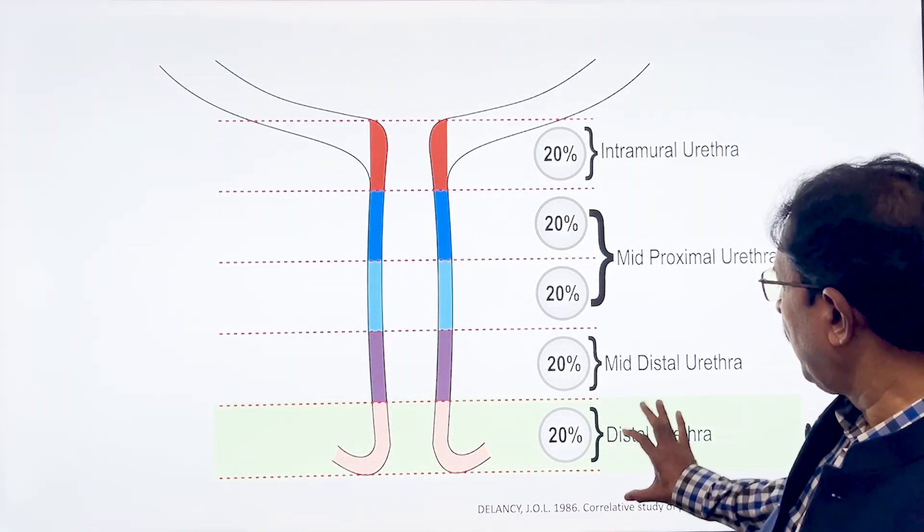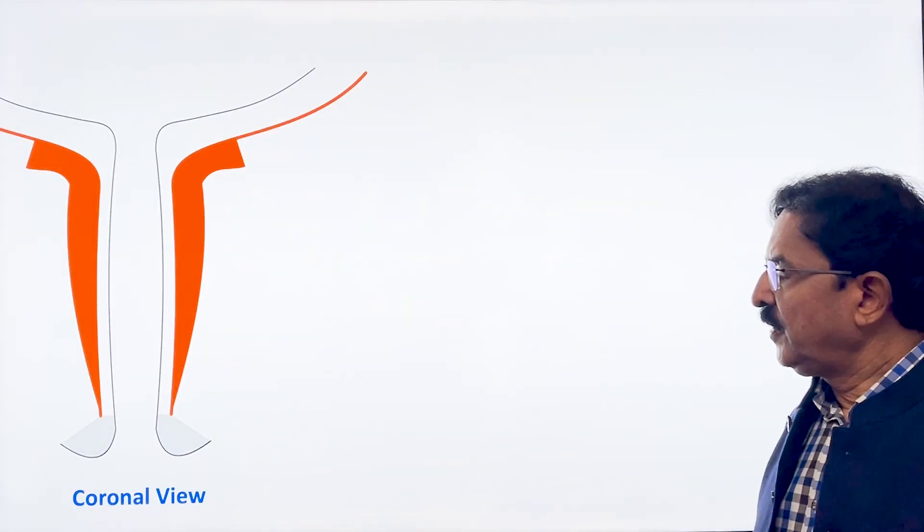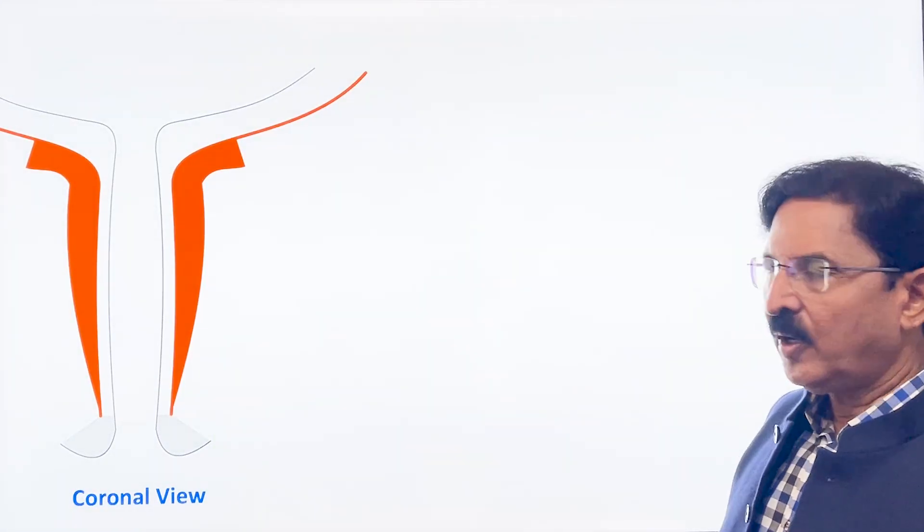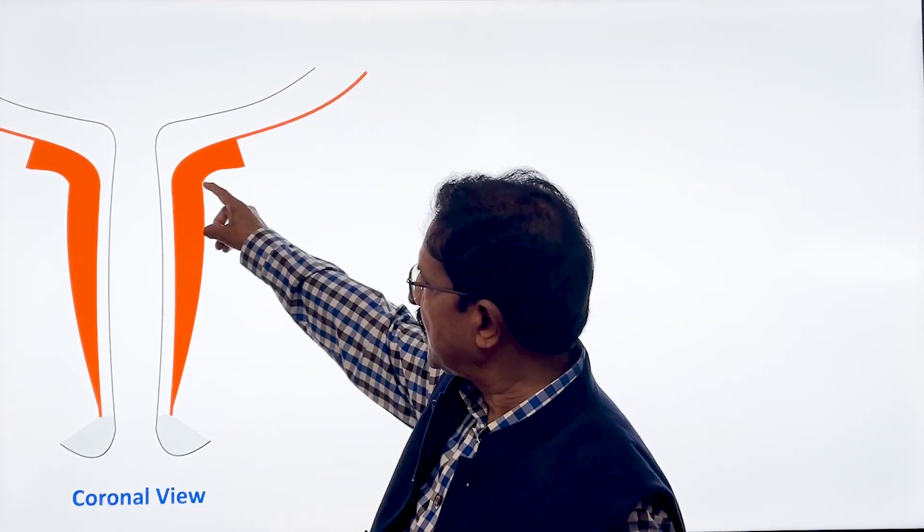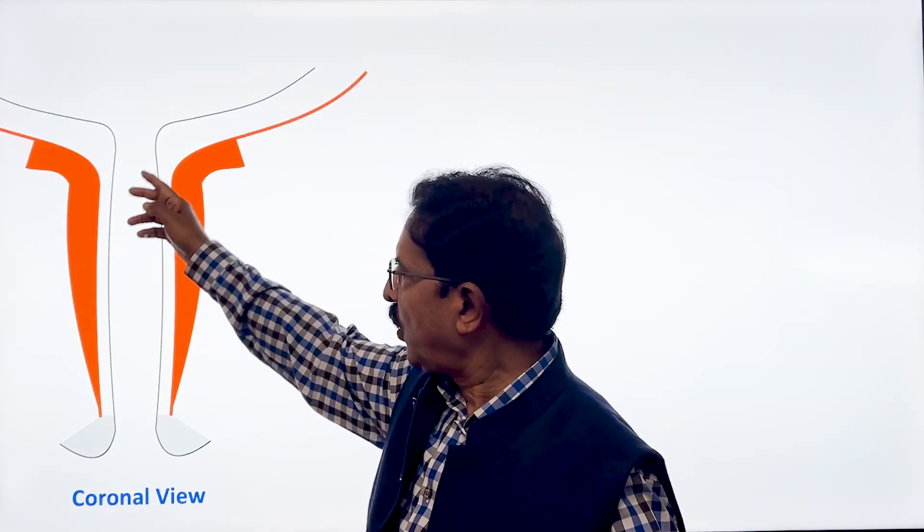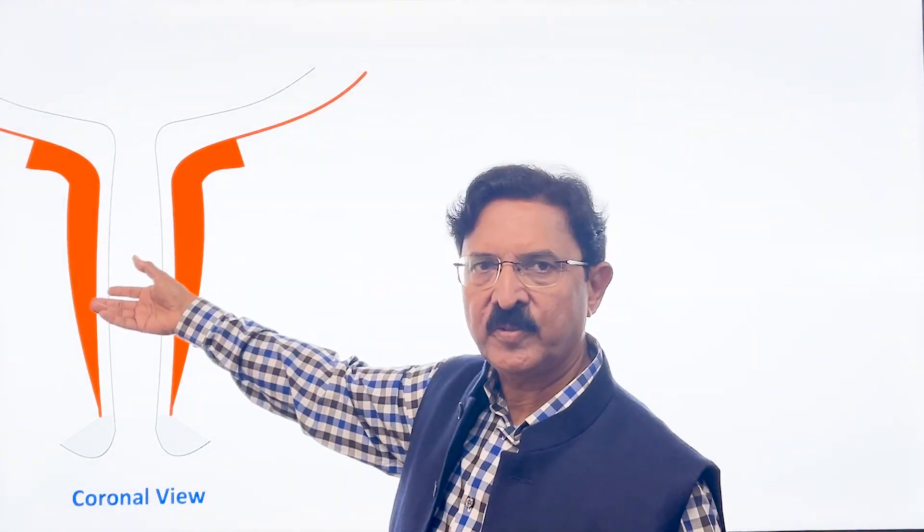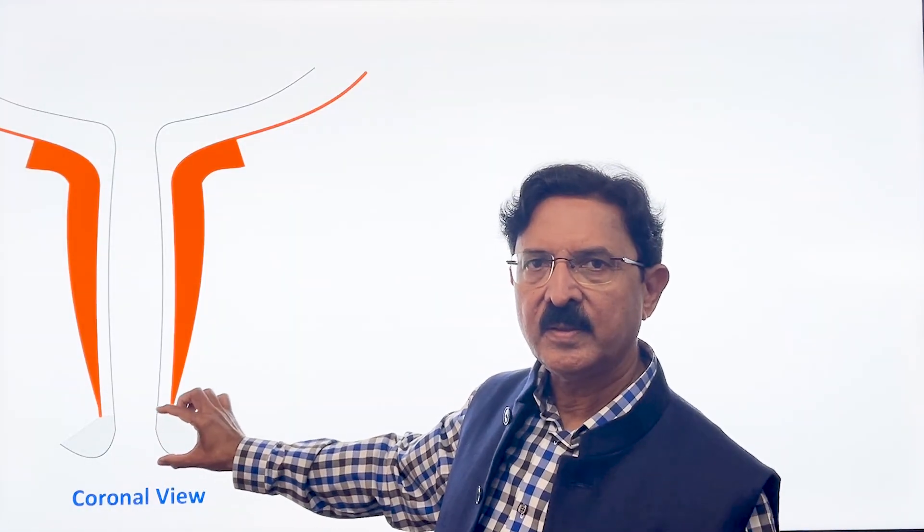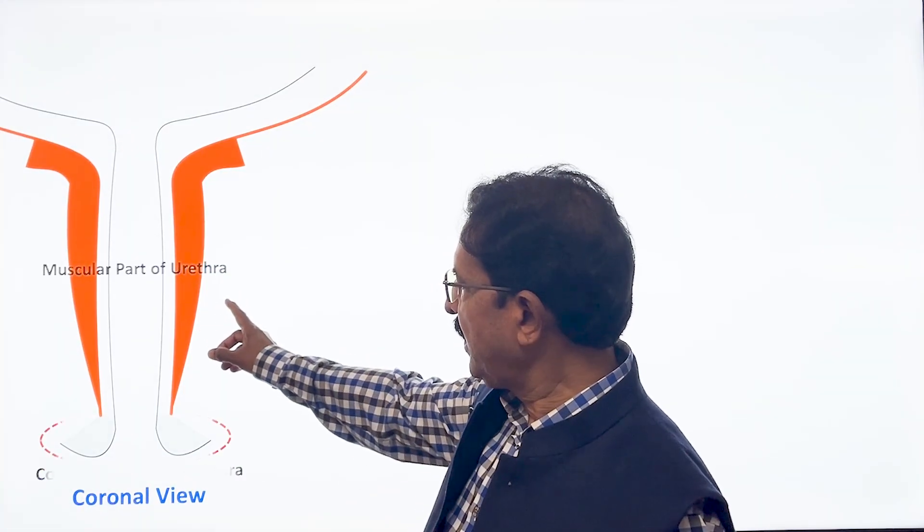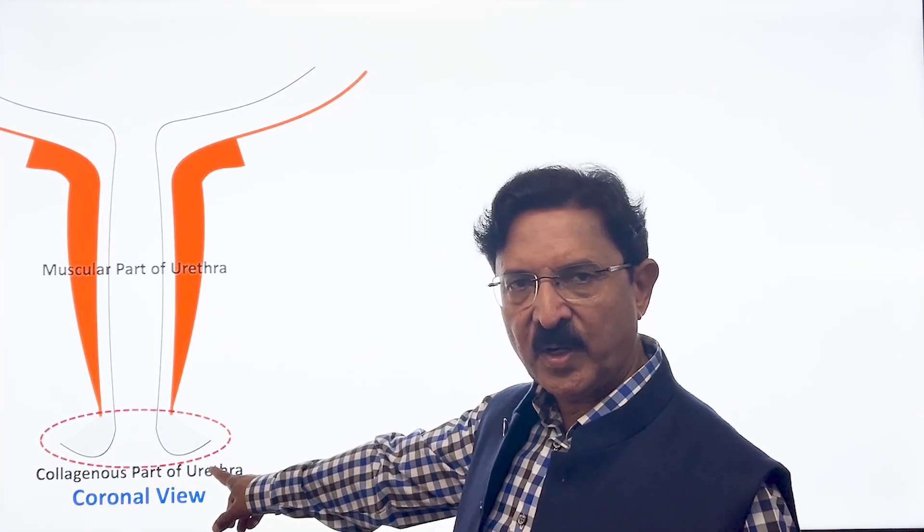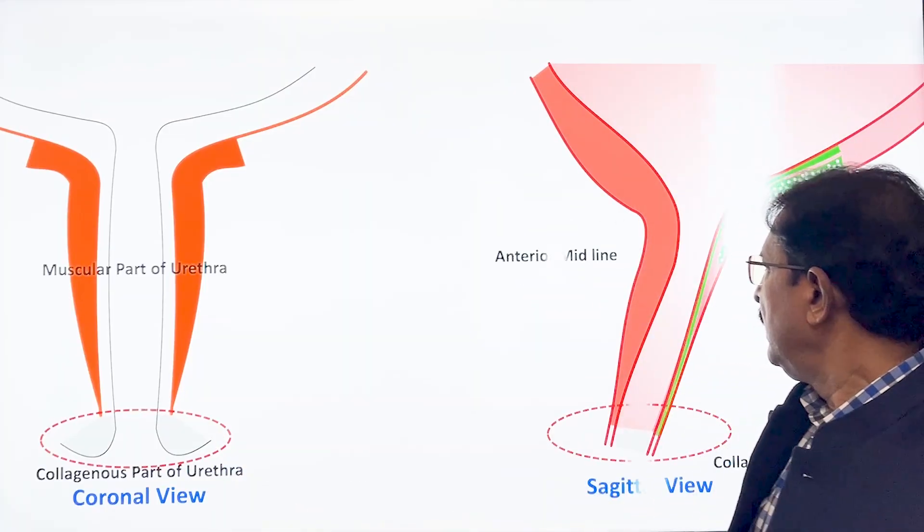If you look at this coronal section of female urethra, the top portion has a muscle sleeve, longitudinal inner and outer circular and then rhabdosphincter. But the distal urethra about which we are talking today does not have any muscle layer. It is only a simple collagenous tube. So this is the muscular part and this is the collagenous part of the urethra and this is about which we are talking.